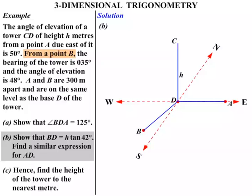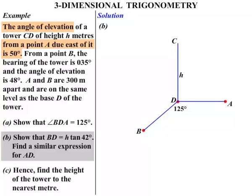The reason we're marking it there, a little bit off the south line, is that earlier on we found that angle BDA was 125 degrees. Now angle of elevation from the point A due east of it is 50 degrees. So from A to the top of the tower, 50 degrees is the angle of elevation. From the point B, the angle of elevation is 48 degrees.